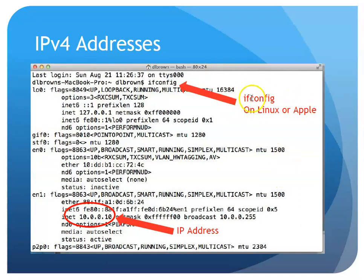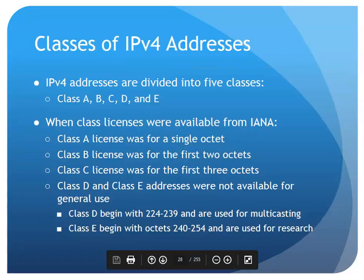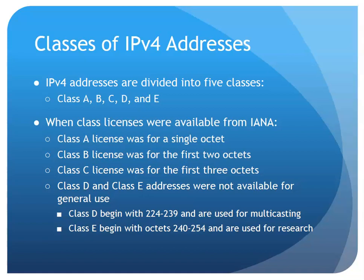If I do ifconfig on Linux or Apple, I will see the IP address itself. If I do ipconfig on Windows, I see the IP address itself. Remember, there are classes of IPv4 addresses — this was from the early days of the internet. IANA organized the IP addressing scheme into classes and allocated IP addresses based on the type of network or type of organization you were.